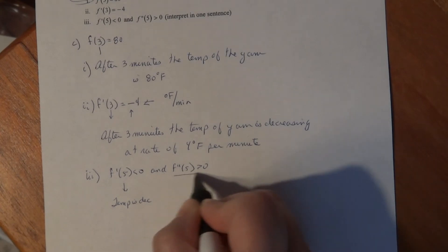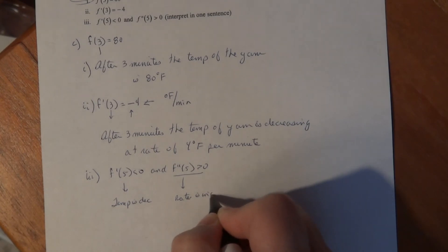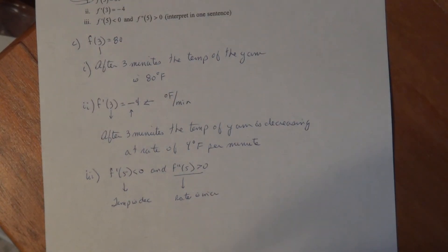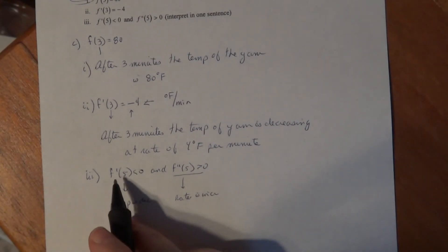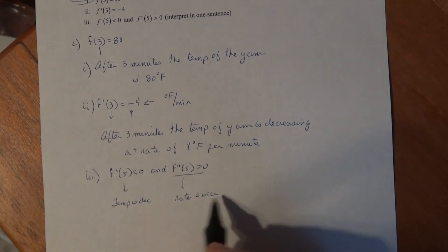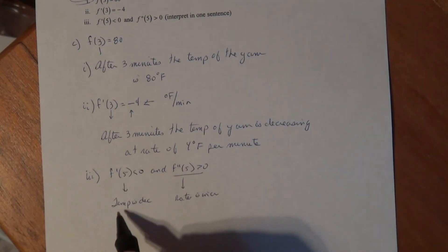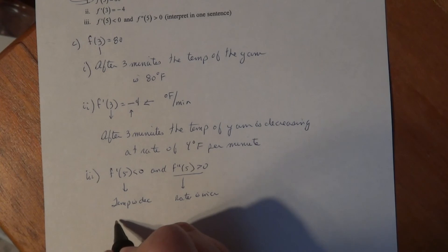F double prime being greater than 0 says my rate is increasing. The signs of the derivatives always tell you whether the previous function with one less derivative is increasing or decreasing. You can state this in one succinct sentence. After—again, start with the input—